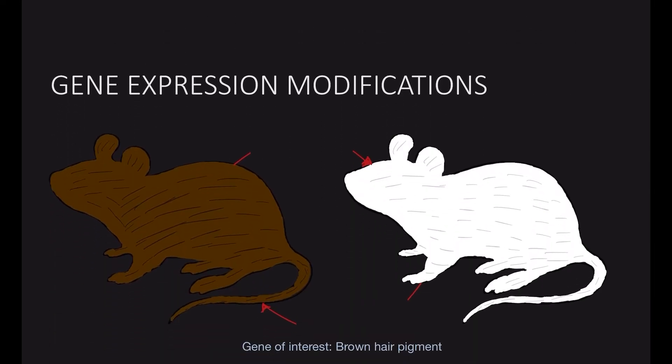Gene expression modifications involve insertion of genes into the genome, or targeted insertion and/or deletion of a gene through recombination with the mouse gene. We can do a gene knockout and a gene knock-in. Random insertion is constitutive, whereas targeted insertion is conditional.